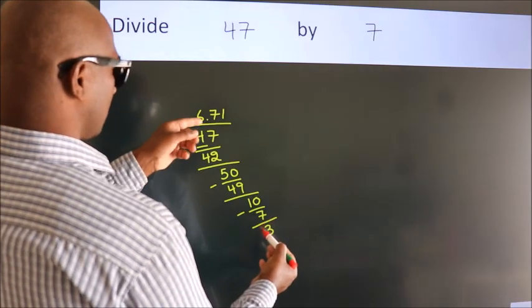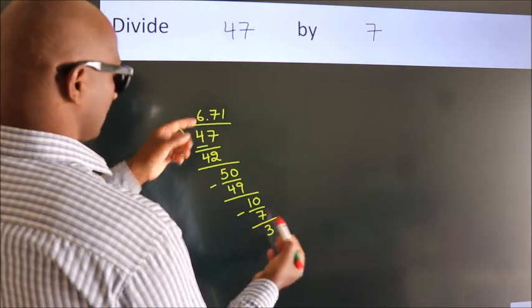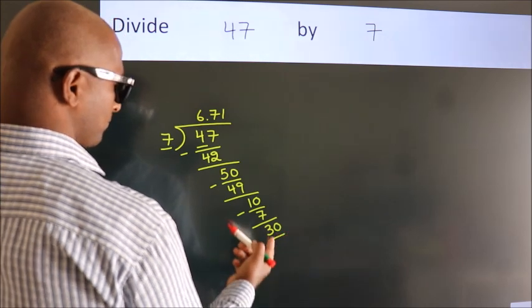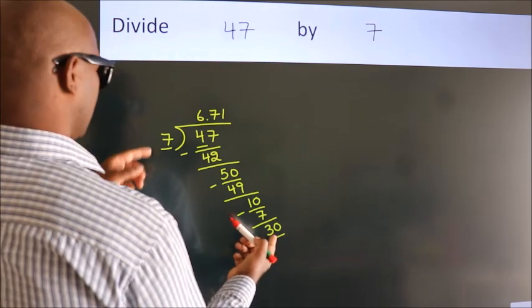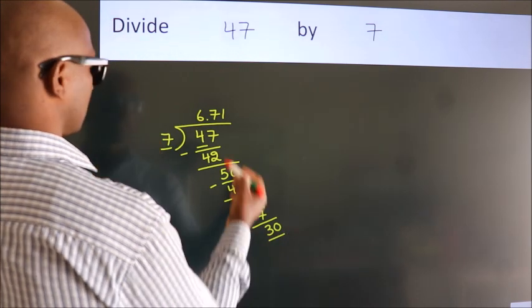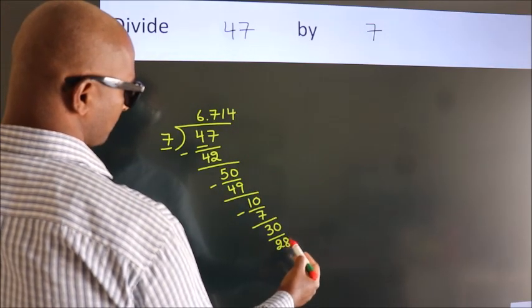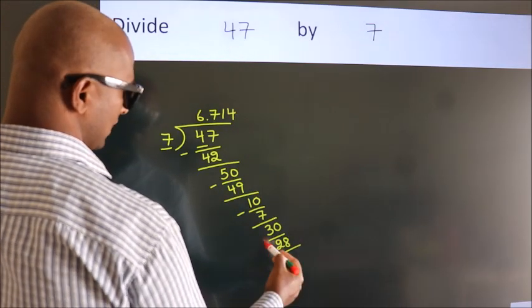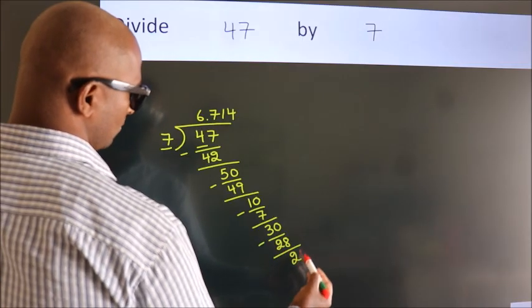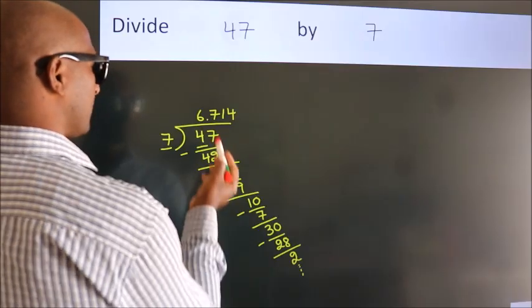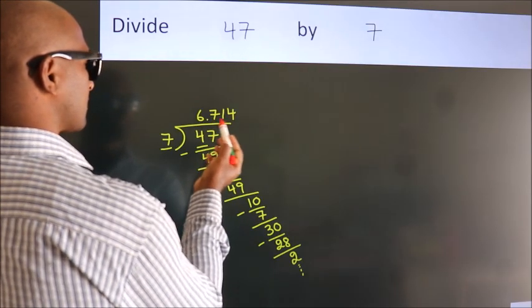After this, we already have the decimal, so directly take 0. So 30. A number close to 30 in the 7 table is 7 times 4, which is 28. Now we subtract. We get 2. And the division continues. It is enough if we do up to 3 decimal places.